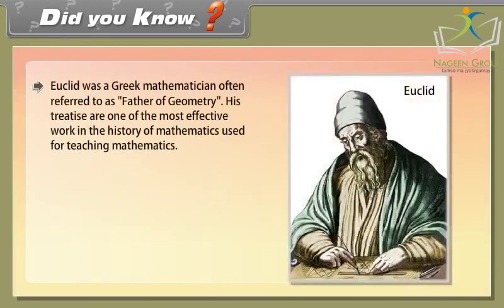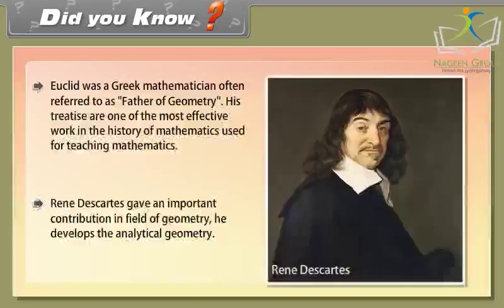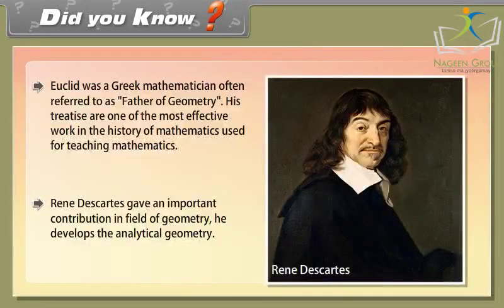Did you know? Euclid was a Greek mathematician often referred to as the father of geometry. His work is one of the most effective in the history of mathematics, used for teaching mathematics. René Descartes gave an important contribution in the field of geometry — he developed analytical geometry.